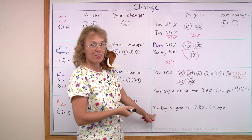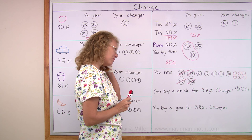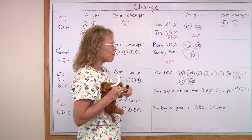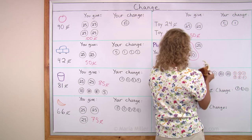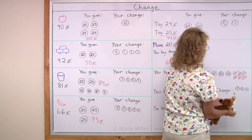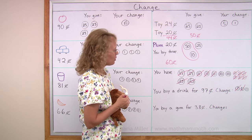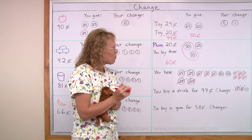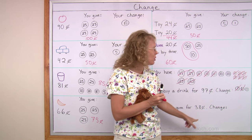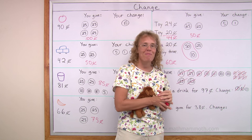Now you go buy a gum for 38 cents. What will your change be? Mathie is saying there's no change — and that's correct, because you have the exact amount: three dimes and eight pennies, 38 cents. You got those pennies when you bought the drink, so no change. But it's also possible you would use four dimes to pay for the 38 cents — maybe you're not counting all the pennies in your pocket. In that case you would get 2 cents change.